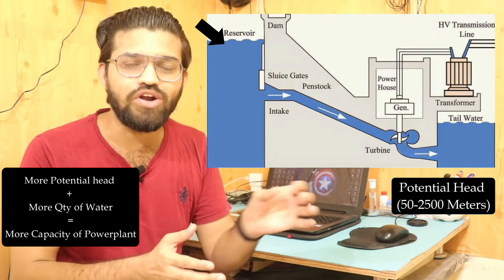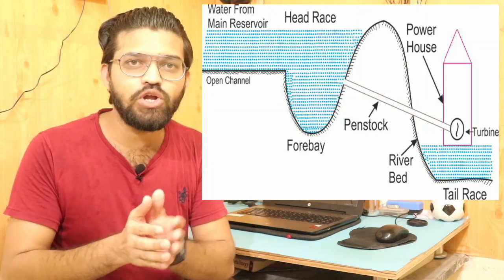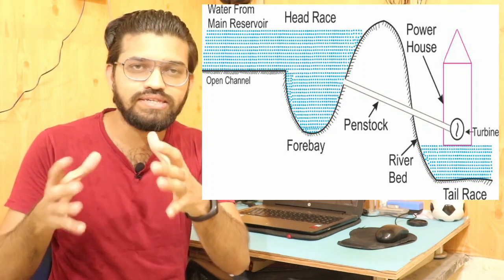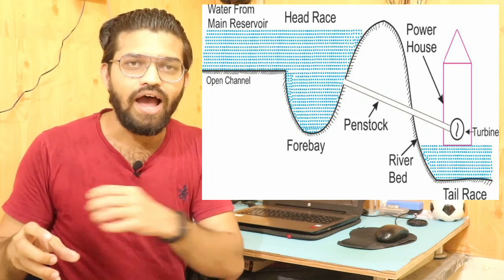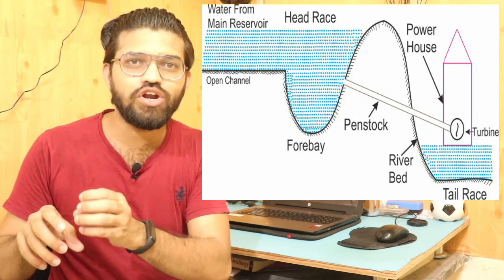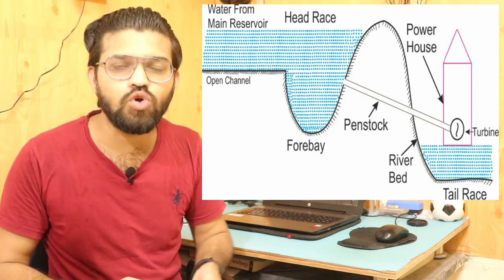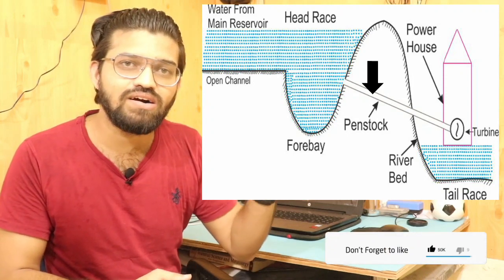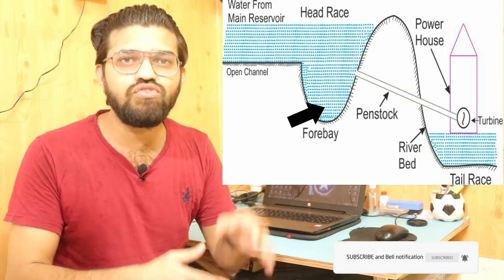Let's understand the components of this hydroelectric power plant. First, the reservoir — the rainwater is collected at the reservoir. Inside that particular reservoir there is a section which has some sort of tunnels through it. From these tunnels, the water gets passed through a slope — you can see over here, this is the slope. This particular slope is called the penstock, and the tunnels which are there are called the forebays.